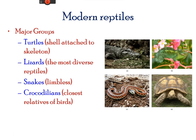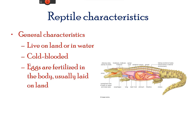Reptiles are tetrapods, however some are limbless. They have vestigial characteristics of where limbs were present. These include turtles that have a shell, lizards, snakes, and crocodiles. They live on land or in water and are cold-blooded, becoming hotter and colder depending on the temperature outside. When the sun sets their bodies get cooler, however they soak up heat during daytime. They lay eggs on land, however these eggs are fertilized in the body.